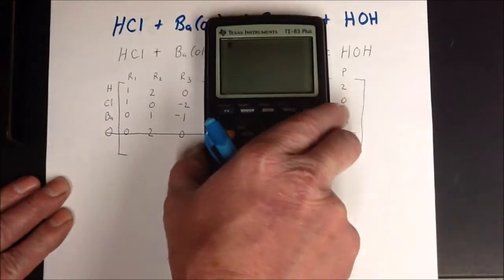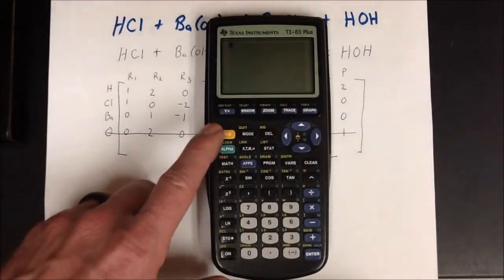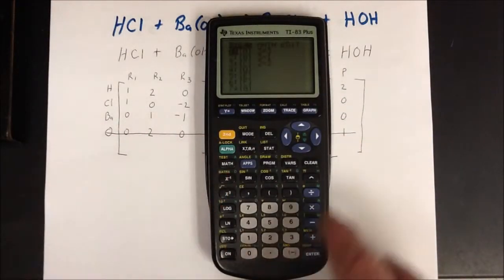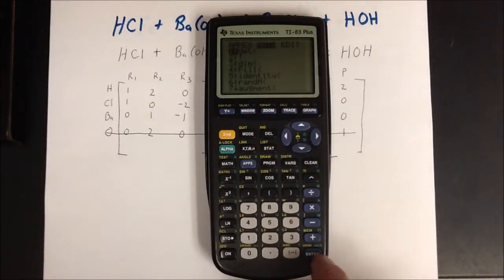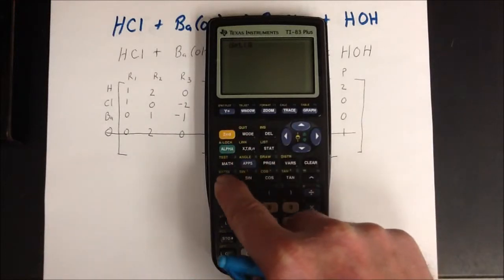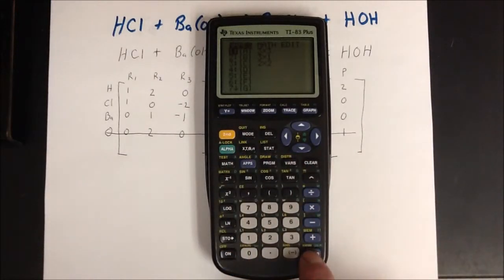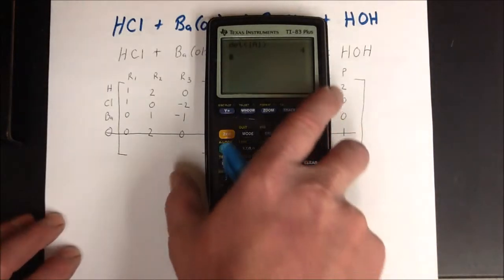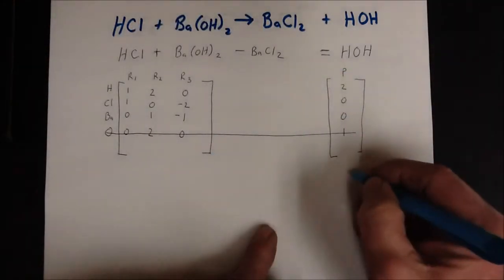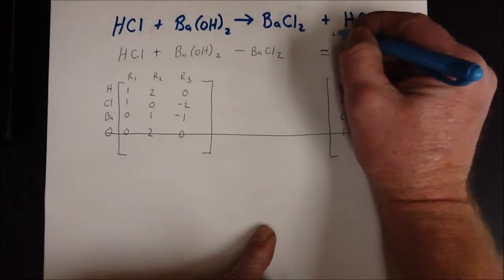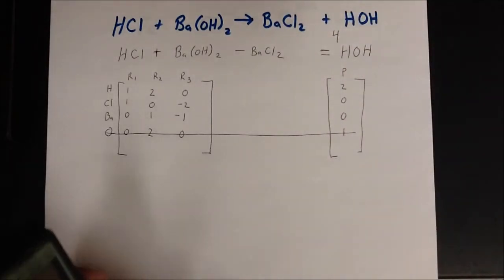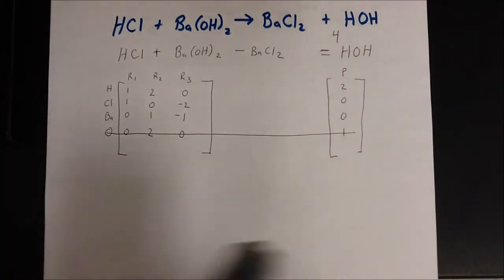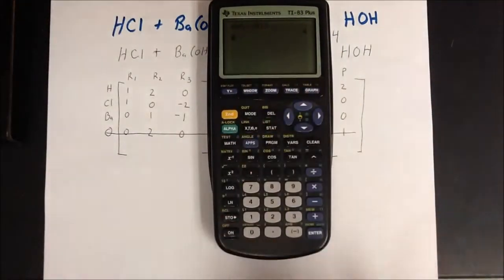Now I'm ready to do the calculations. First, I hit 2nd x⁻¹ to bring up the matrix, arrow over to Math, and select the determinant for matrix A — enter on option 1 as determinant. Hit 2nd x⁻¹ again, select matrix A, close parenthesis, and hit Enter. I get a 4. That is the coefficient for the final product. If you're thinking that doesn't balance with a 4, we'll see what happens when we go through the rest of the calculations.